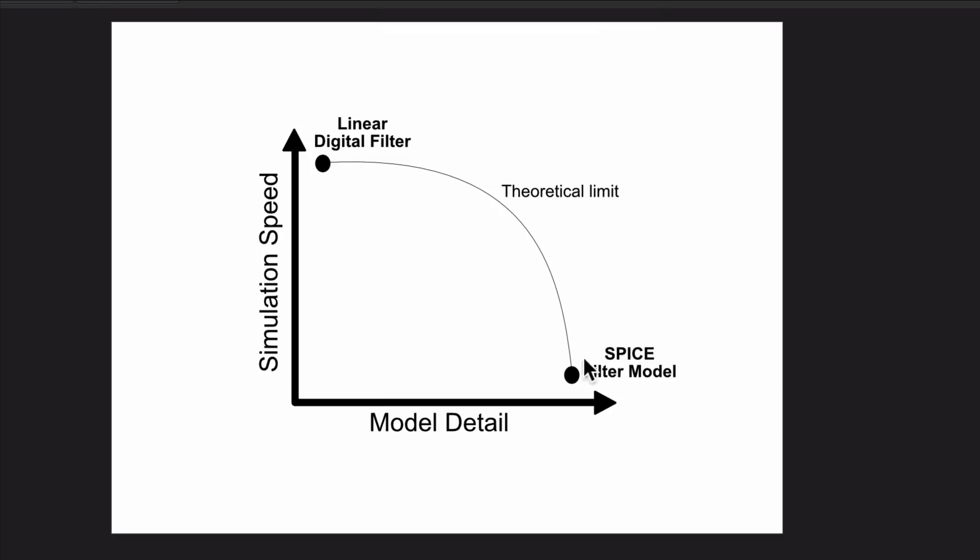On the other side we can get a very simple digital model that can be linear, and this model is going to be super fast because it will require very few operations, but it's not going to be detailed at all.